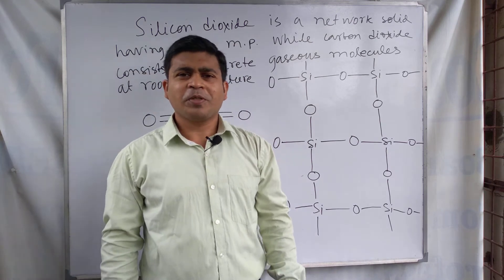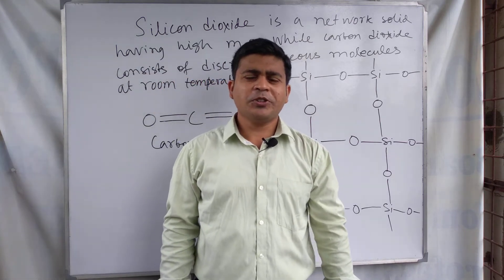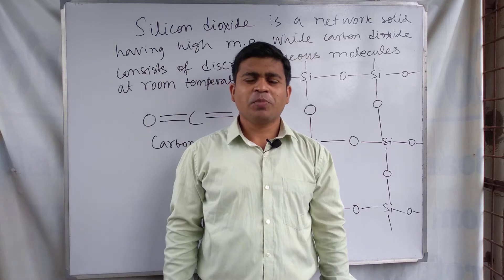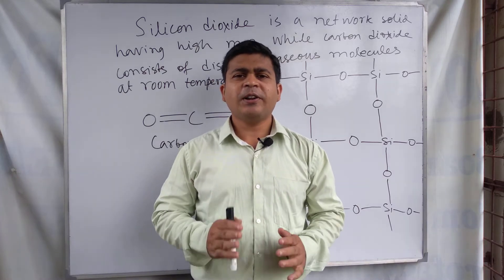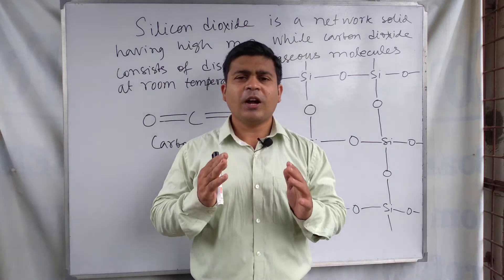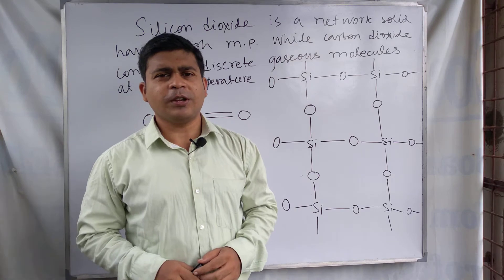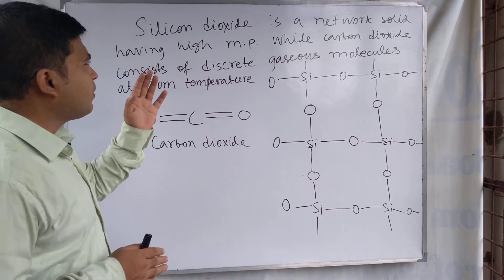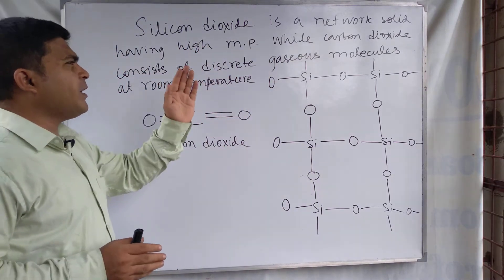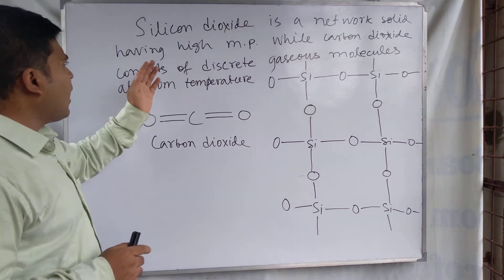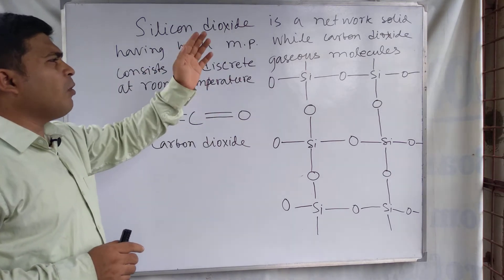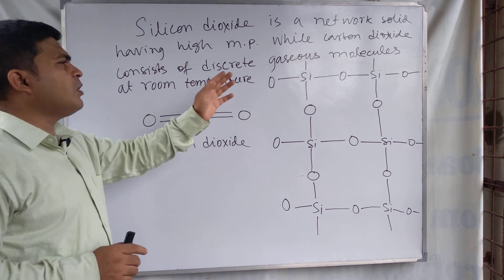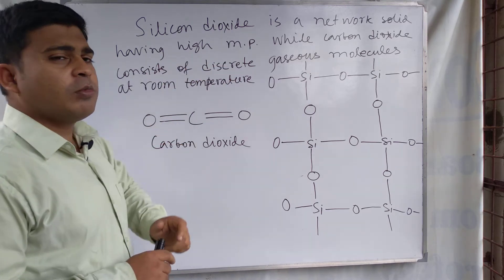Hello everybody, welcome to this channel. I am Atanu Betal. In this video lecture we discuss the differences between carbon dioxide and silicon dioxide — specifically, that silicon dioxide is a network solid having a high melting point, while carbon dioxide consists of discrete gaseous molecules at room temperature.